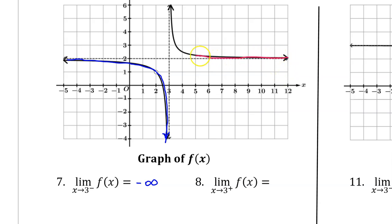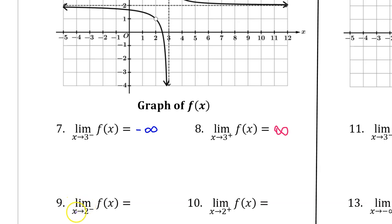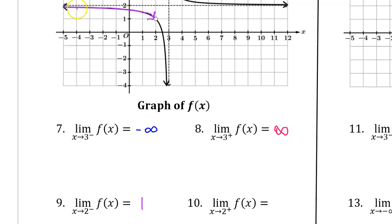As x approaches 3 from the right, f of x approaches positive infinity. For number 9, we need to find the limit as x approaches 2 from the left of f of x. At x equals 2, we have a hole, so this limit is going to be a constant — the y value of the hole. So the answer is 1.